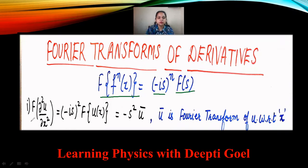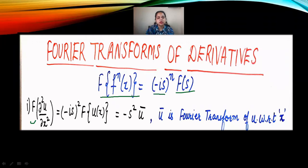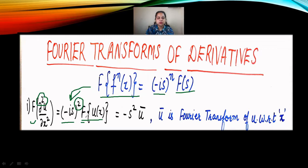If we apply the Fourier Transform on the second order partial derivative of the function, we have the result that F applied on del square u by del x square — using this identity, since we have a second order derivative, we will have on the right hand side minus iota s for n equal to 2, so it is minus iota s squared into f of the function. The function is now u, a function of x, written as F of ux. Since iota square is minus 1, we get minus s squared, and F of ux can also be written as u bar.